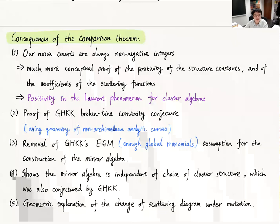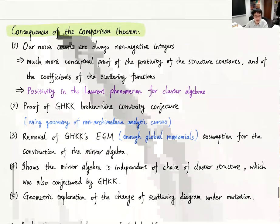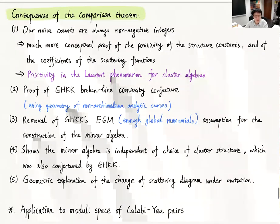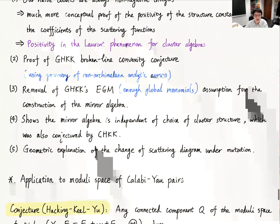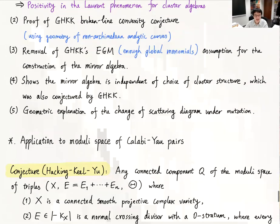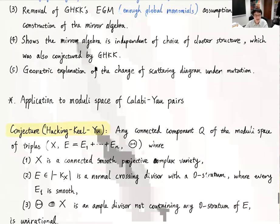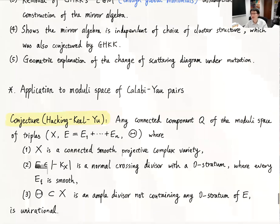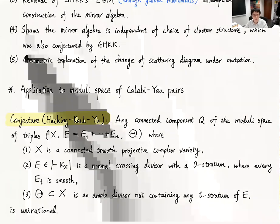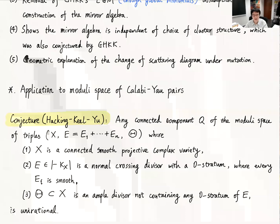We also help remove some technical assumptions, show the mirror algebra is independent of choice of cluster structure, and get some explanation of change of scattering diagram under mutation — some of which were conjectured in GHKK. We have another application to the moduli space of Calabi-Yau pairs, but let me just stop here. Since I have sent the notes, if you are interested you can look at them. Thank you very much for your attention.